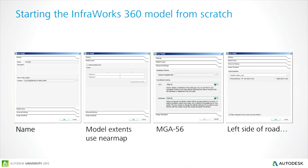When you fire up InfoWorks for the first time, it's all about the settings — make sure MGA56 and GDA94 are configured before starting the model. Give it a name, set the model extents (optionally using the Nearmap data), and in advanced settings send everything to MGA56. By default it starts on the right-hand side of the road, so make sure you set it to metric and driving on the left-hand side of the road.